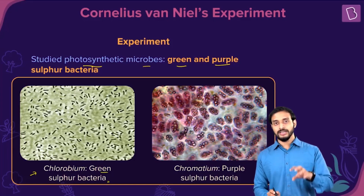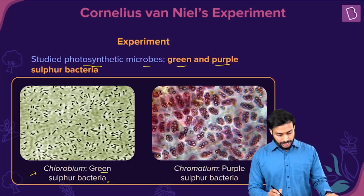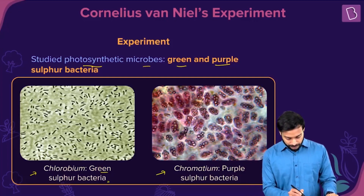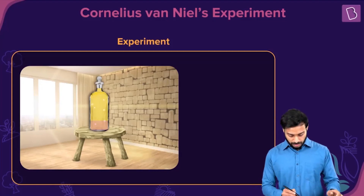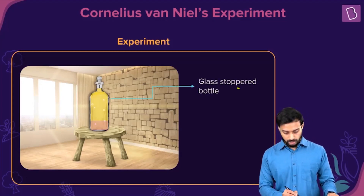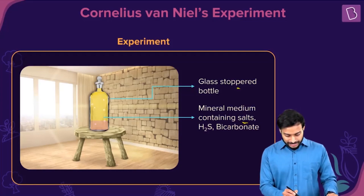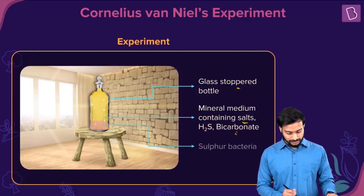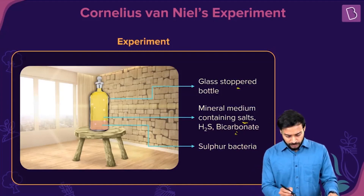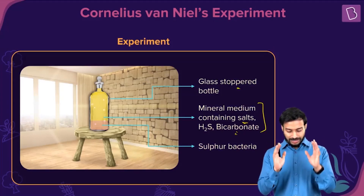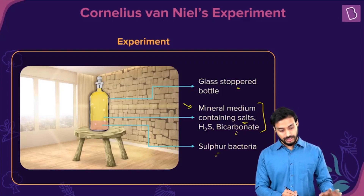What he demonstrated is that photosynthetic bacteria — the green and purple sulfur bacteria — were studied. The purple sulfur bacterium Chromatium was placed in a glass-stoppered bottle containing a mineral medium with salts — sodium chloride, magnesium chloride — along with bicarbonate and sulfide. This bottle was then exposed to sunlight.